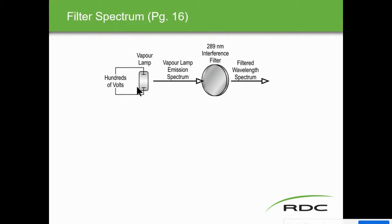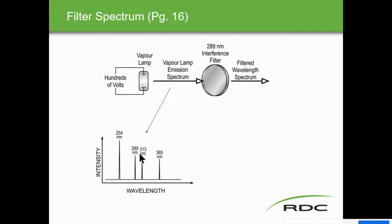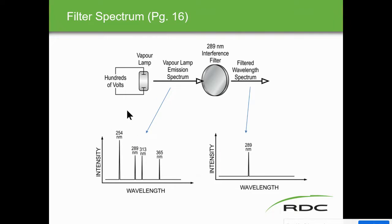An example of a filter spectrum: a mercury vapor lamp emits line spectra at 254, 289, 313, and 365 nanometer wavelengths. Using a 289 nm interference filter, all other wavelengths are filtered out, and only the 289 nm wavelength of interest passes through to the sample cell.